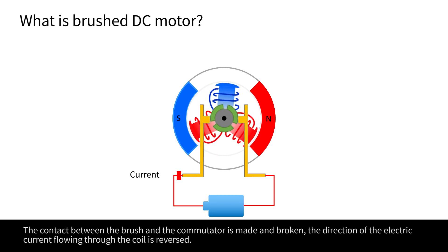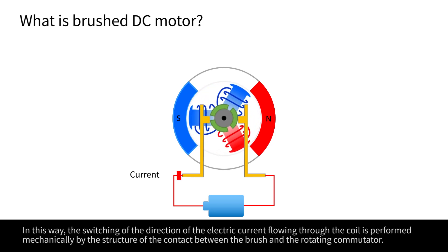The contact between the brush and the commutator is made and broken, the direction of the electric current flowing through the coil is reversed. In this way, the switching of the direction of the electric current flowing through the coil is performed mechanically by the structure of the contact between the brush and the rotating commutator.